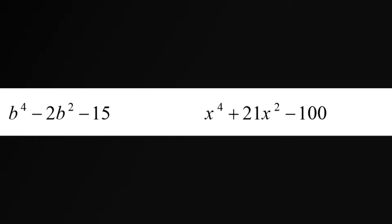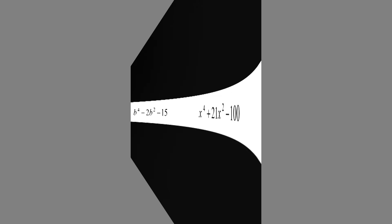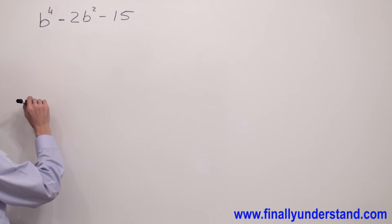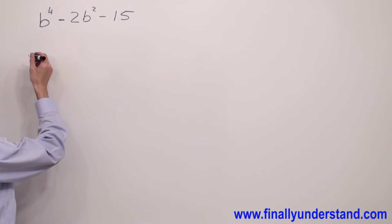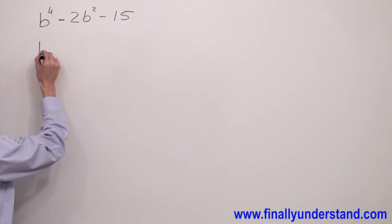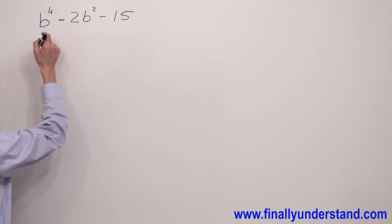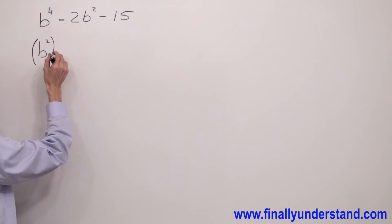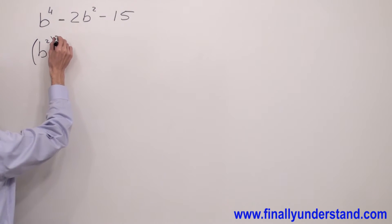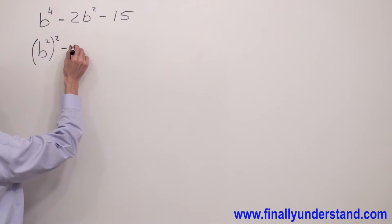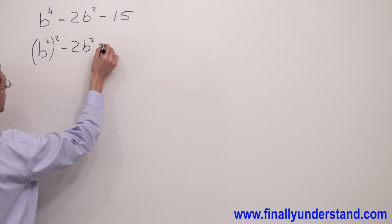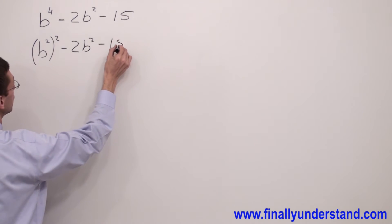Let's take a look at this example. We're supposed to convert this trinomial to a quadratic trinomial. I'm going to write b to the fourth as b to the second power inside the parenthesis, raised to the second power, minus 2b squared minus 15.